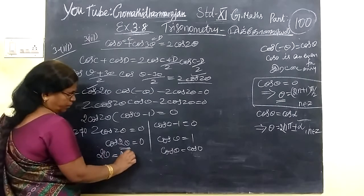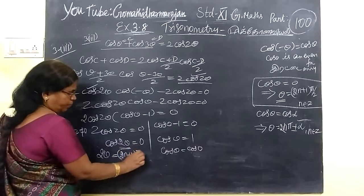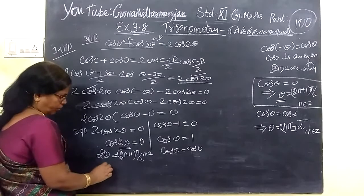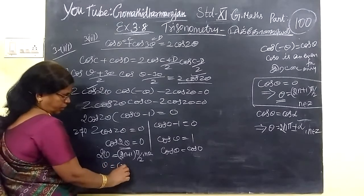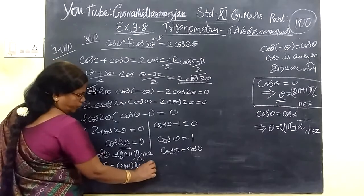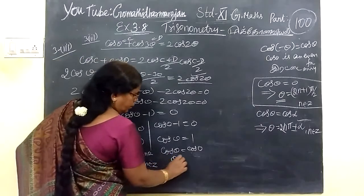Here it is 2n plus 1, so θ equals (2n plus 1)π/4.